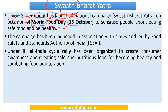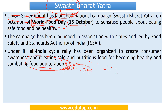An all-India cycle rally was organized to create consumer awareness about eating safe and nutritious food and for combating food adulteration. Food adulteration means when certain chemicals or unwanted things are added to food items — done to cheat people, as those unwanted things cost the shopkeepers less than the original food item. For example, in pepper, papaya seeds are sometimes mixed, and artificial milk is also produced. This campaign was launched by the union government in association with states and led by FSSAI — Food Safety and Standards Authority of India.